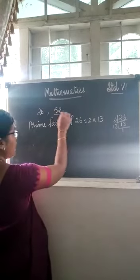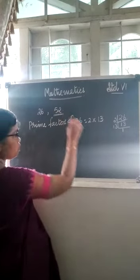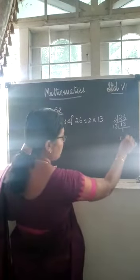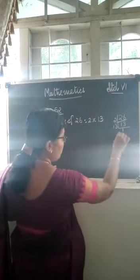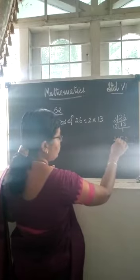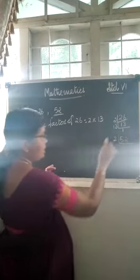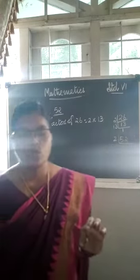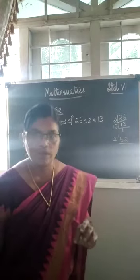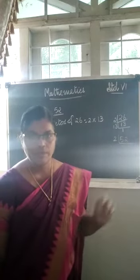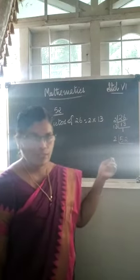Now let us see the prime factors of 52. For both numbers, we have to find the prime factorization. 52 divided by 2 — since its ones digit is 2, we can divide it by 2. In the prime factorization, we have seen that.